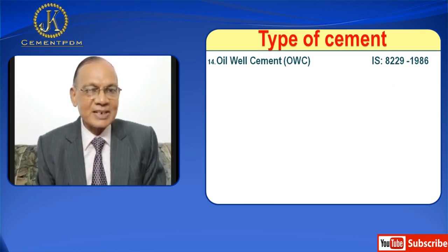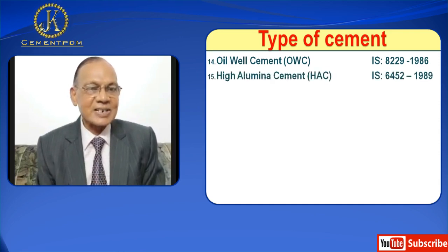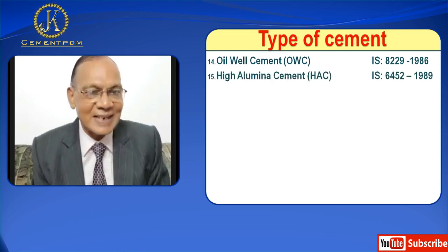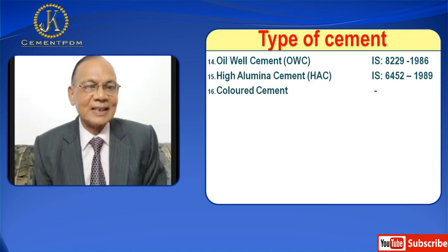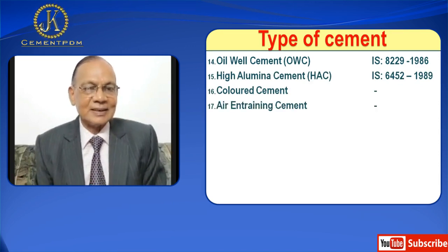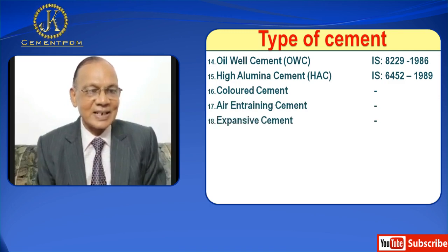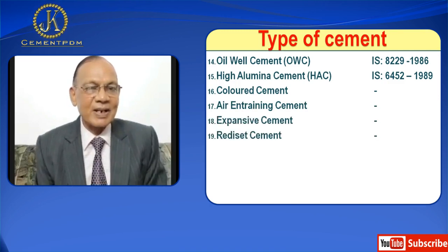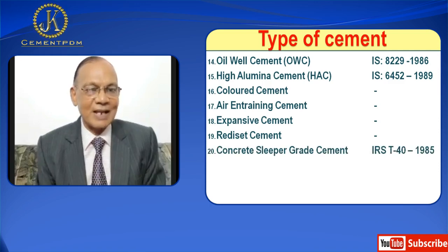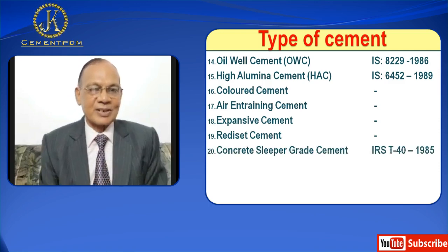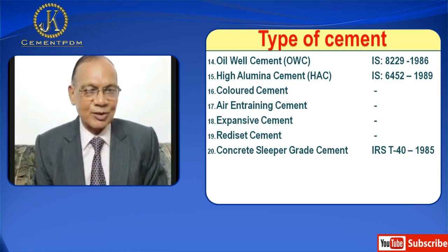Number fifteen is High Alumina Cement, HAC — IS 6452-1989. Then we have Coloured Cement. Next, Air Entraining Cement. Eighteen is Expansive Cement. Nineteen is Ready Set Cement. Number twenty is Concrete Sleeper Grade Cement — IRS T40-1985. A recent revision has also come, and number twenty-one is Very High Strength Cement.